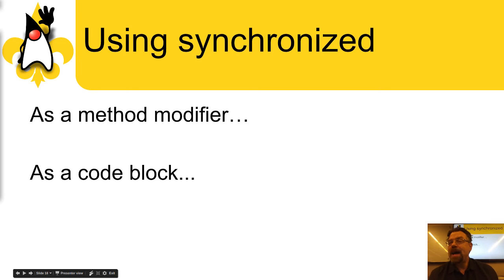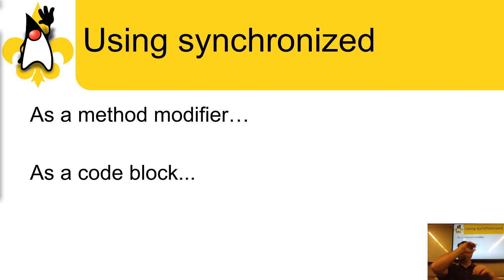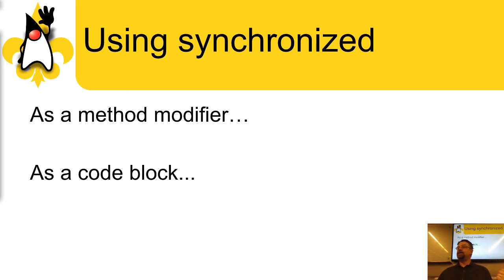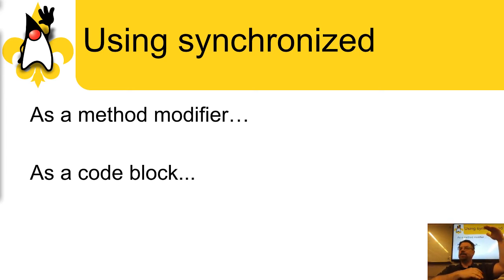Another way to synchronize concurrent data access is using the synchronized keyword in Java. You can use it as a method modifier — put synchronized at the front of a method and it can only ever be run by one thread at a time. That's really simple and very powerful. Unfortunately, if your method is too long or has some blocking operation in it, it could tie up that thread and prevent anyone else from accessing it. For more granular control, there's the synchronized code block — instead of setting a whole method as synchronized, you put synchronized around just a small code block with an object, giving much more fine-grained control.